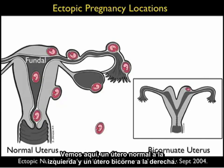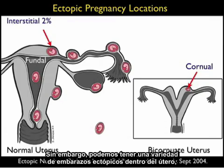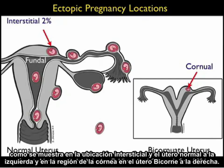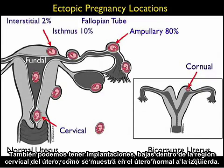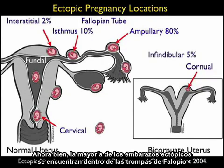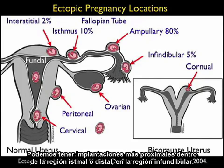We see here a normal uterus to the left and a bicornuate uterus to the right. A fundal location is the definition of an intrauterine pregnancy, as shown in the middle of the normal uterus. However, we can have variants of ectopic pregnancies within the uterus — in the interstitial location in the normal uterus, and in the cornual region in the bicornuate uterus. We can also have implantations low within the cervical region. Most ectopic pregnancies will be located within the fallopian tube, and of those, the majority will be found in the ampullary region. But we can also have implantations more proximal within the isthmal region or distal within the infundibular region.